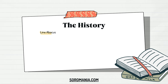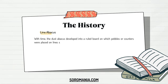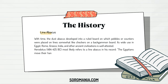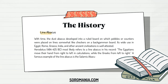The Line Abacus: with time, the Dust Abacus developed into a ruled board on which pebbles or counters were placed on lines, somewhat like checkers on a backgammon board. Its wide use in Egypt, Rome, Greece, India, and other ancient civilizations is well attested. Herodotus (484–425 BC) most likely refers to a line abacus in his record. The Egyptians moved their hand from right to left in calculations, while the Greeks from left to right. A famous example is the Salamis Abacus, preserved at the Athens Museum — a white marble board, 149 by 75 cm, with lines drawn on it.